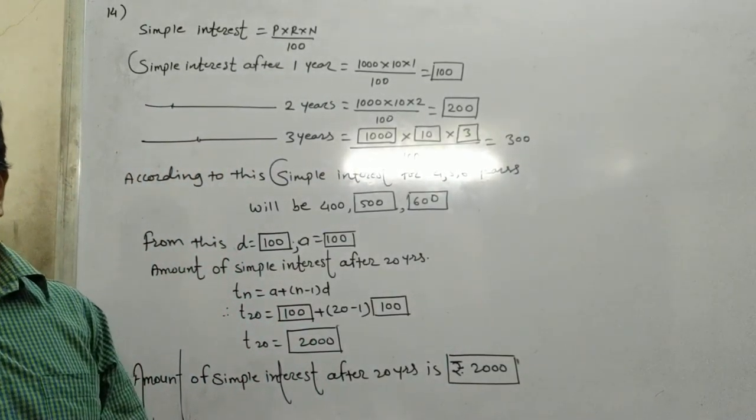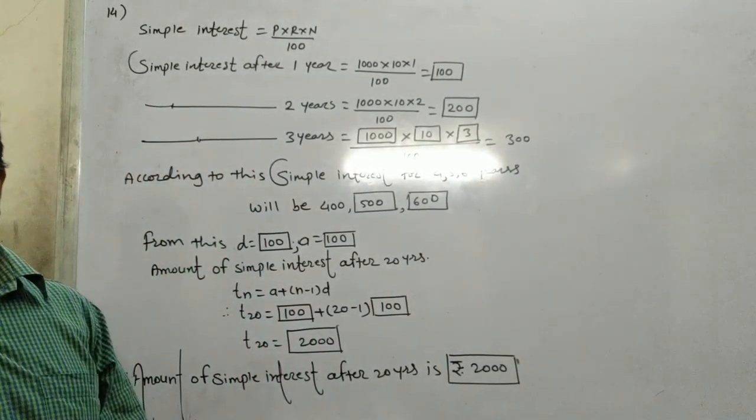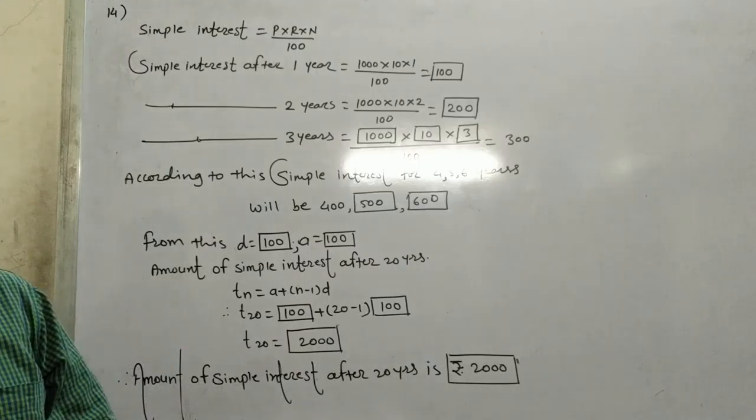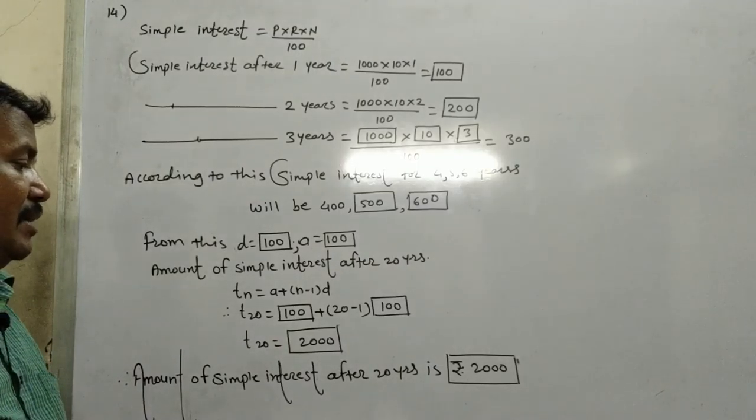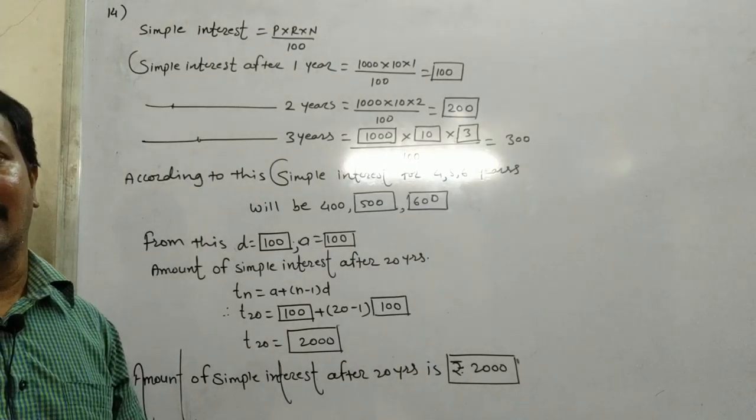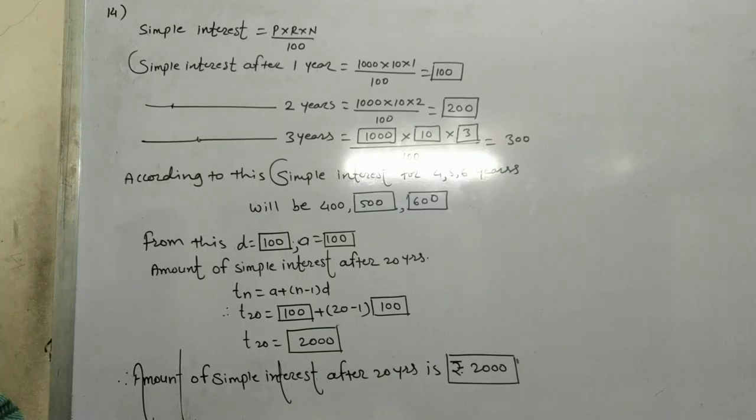So if you invest 1000 rupees at 10% interest, what is the interest after 20 years? Simple interest is equal to P into R into N divided by 100. This is the simple interest formula.